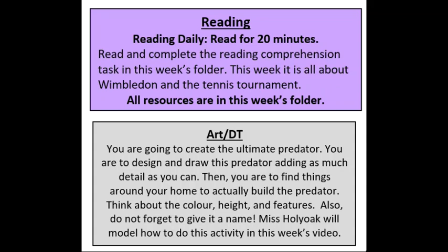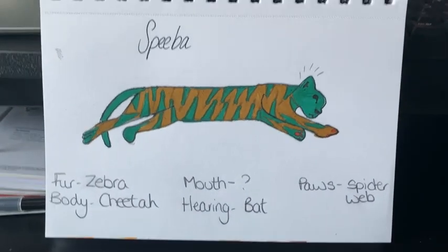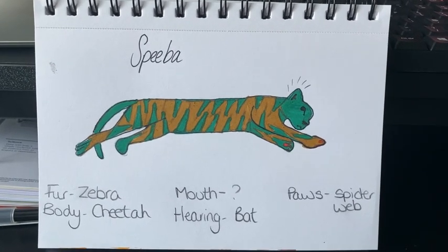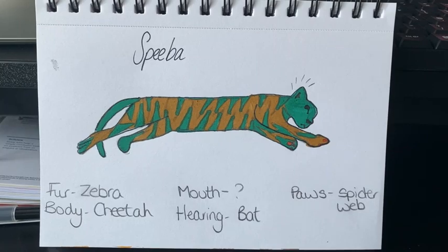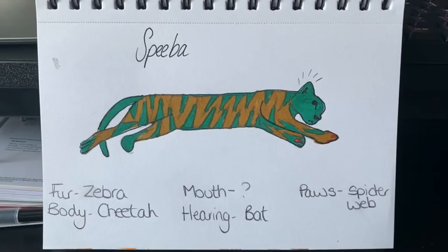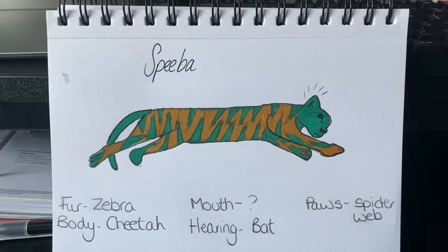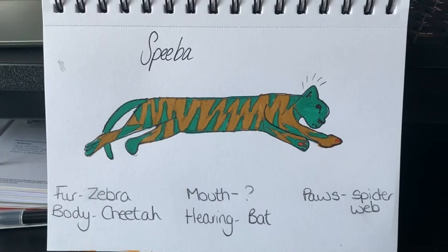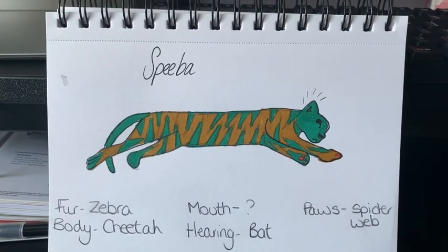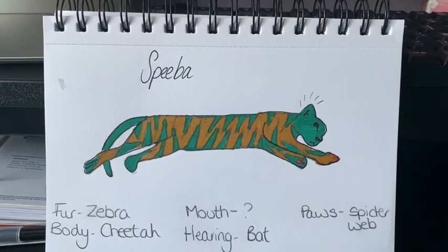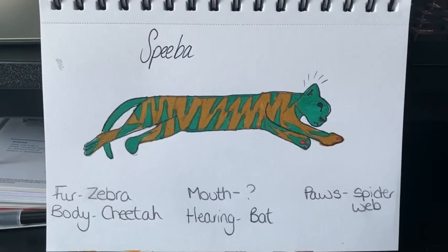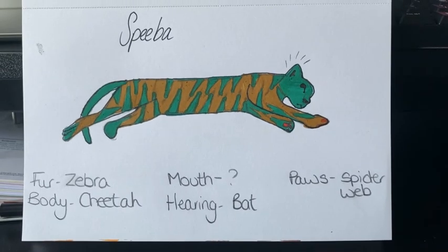I'm going to show you what I have created. Here is my creation — keeping my theme of cats, because I love cats, I've chosen the body of a cheetah. I chose a cheetah over a tiger and lion mainly because of its speed and agility — a cheetah can go up to 60 miles per hour, making it one of the fastest land mammals in the world.